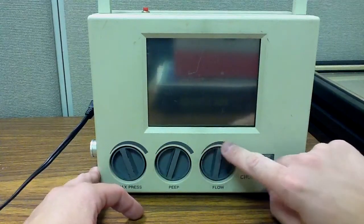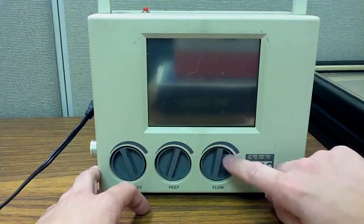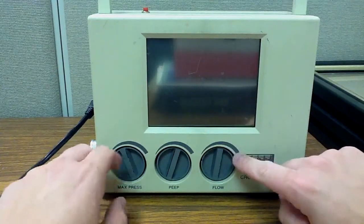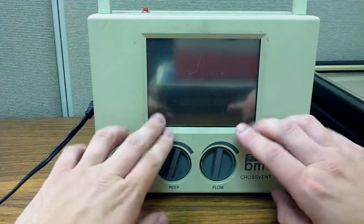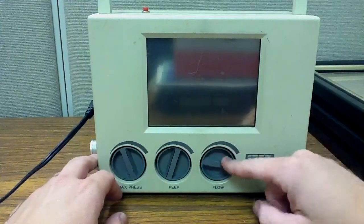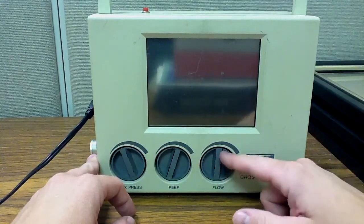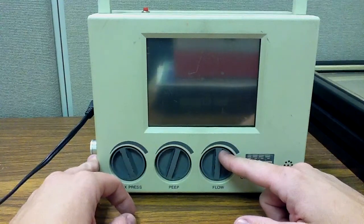And then this here is very important. This will be really important when we talk about I:E ratios and I time, because this is actually how you'll set all that. You will not actually set an I time in volume control ventilation like you would the LTV-1200. If I increase the flow of gas into the patient, that will decrease my I time and increase my I:E ratio.